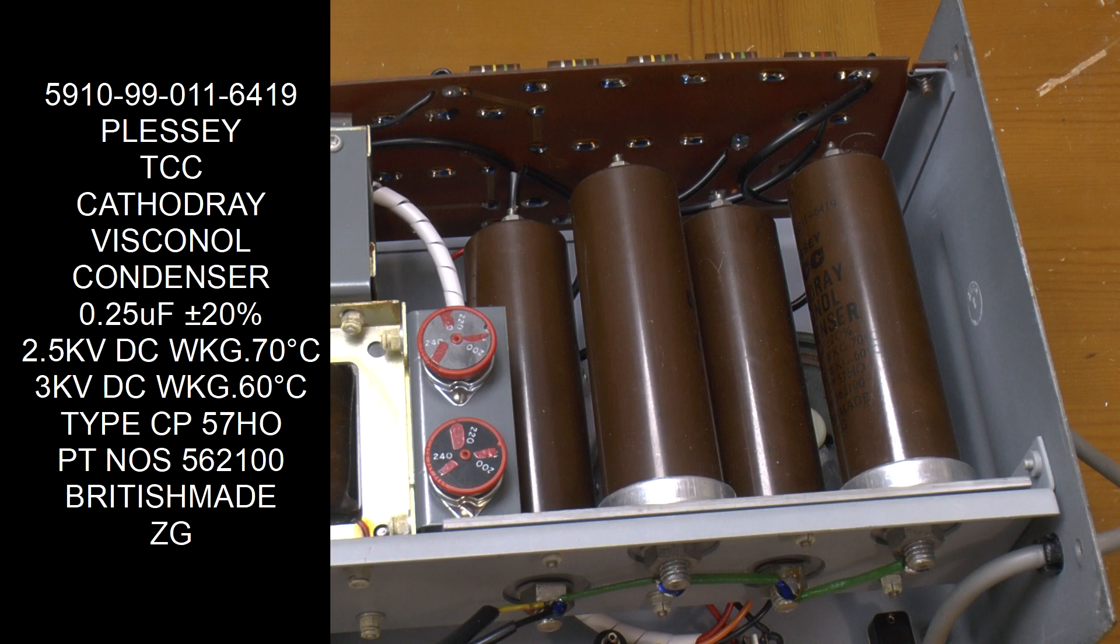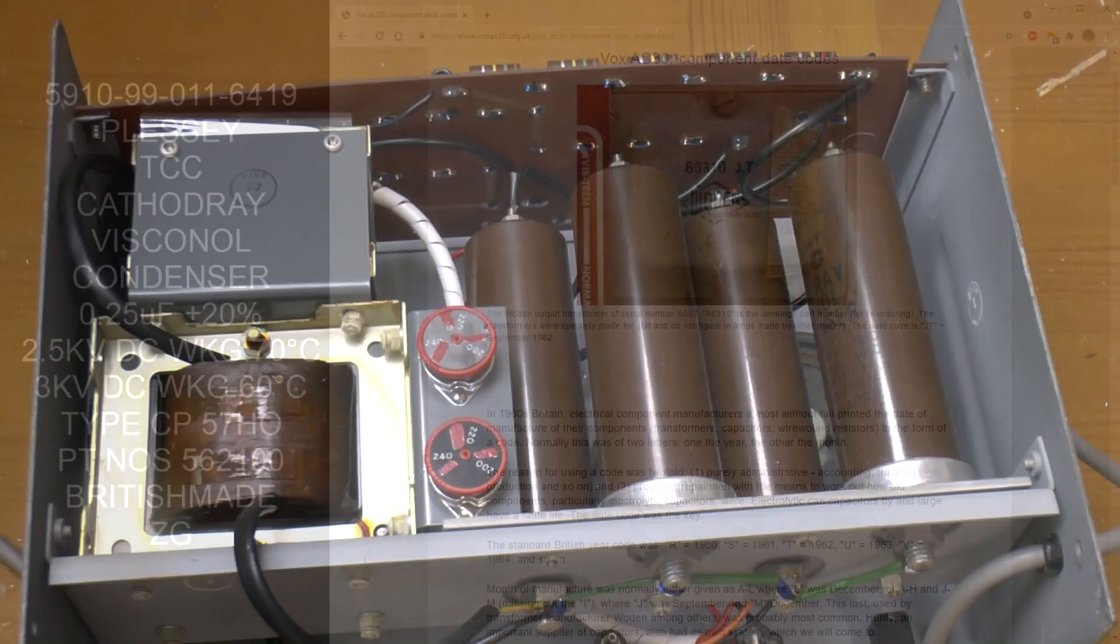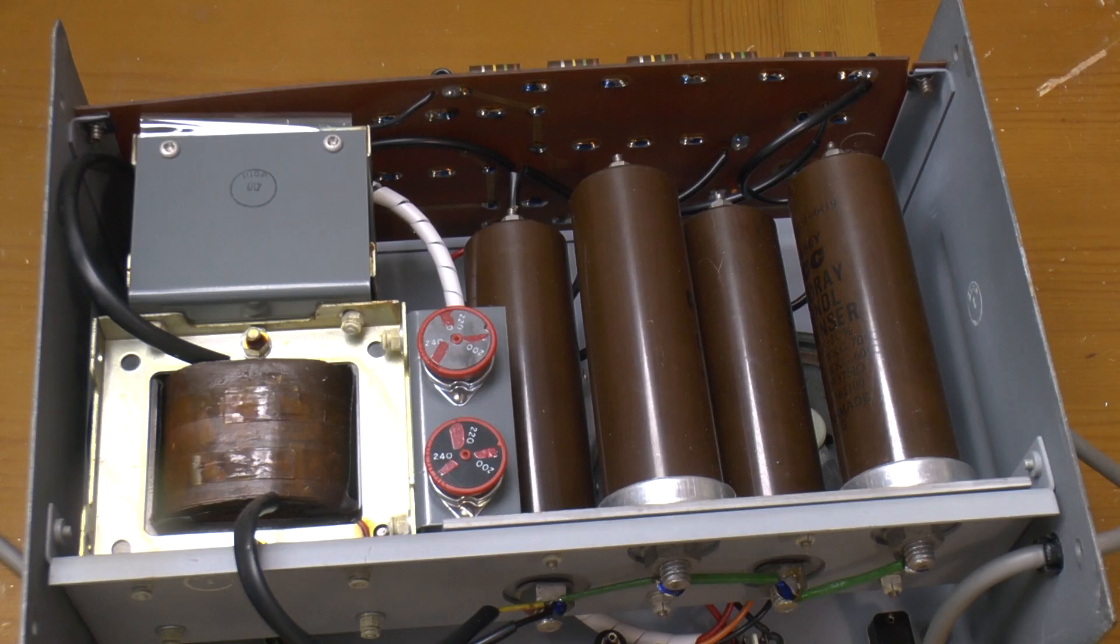Right at the end of that information on the side of the capacitor is a pretty big clue. ZG is a date code. Z is 1968. G is the seventh letter of the alphabet, so the seventh month. So we've now got a date of manufacture for the whole unit somewhere between July 1968 and April 1971.